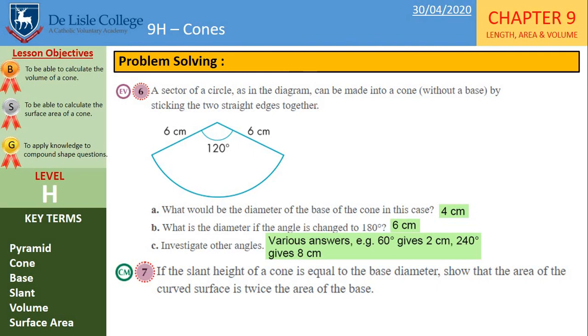So if the angle is changed to 180 degrees, we'll end up with 6 centimeters for the diameter. And for this part C, you could have several answers. So, for example, 60 degrees would give you 2 centimeters. 240 degrees would give you 8 centimeters. You may notice a pattern there. And there are several other answers.